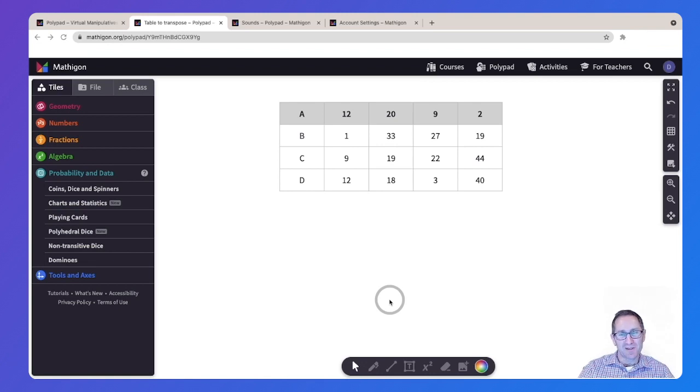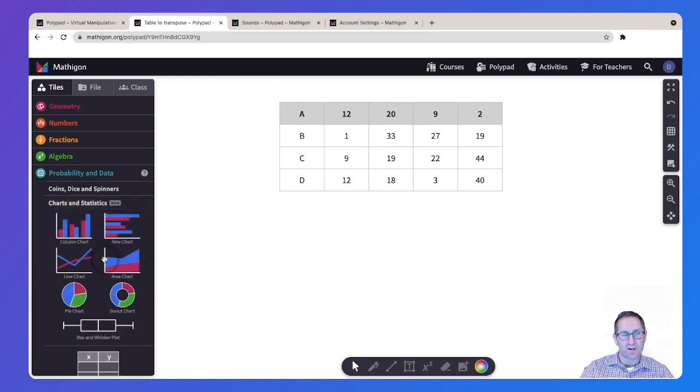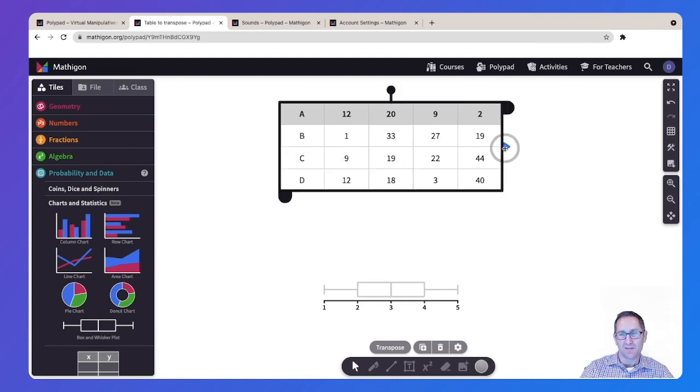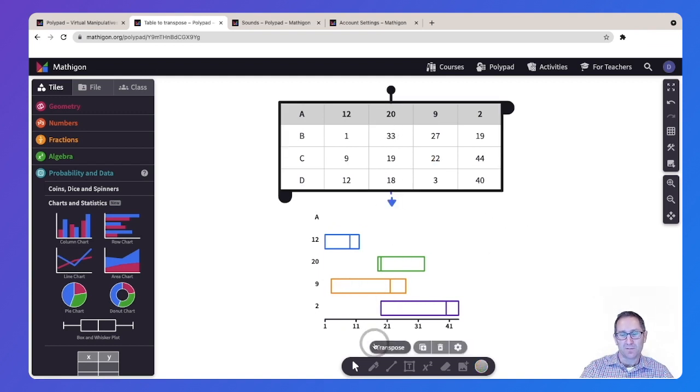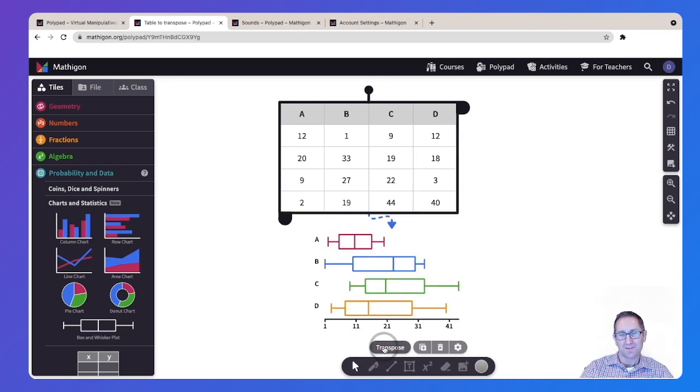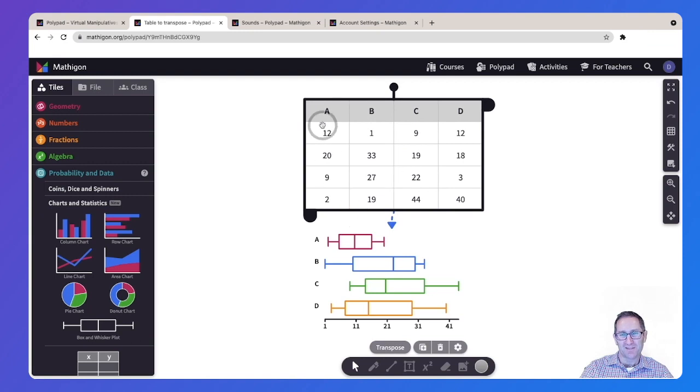The next new feature is the ability to transpose data in a table. Here is a table of data that I want to make a box and whisker plot for. And I want a box and whisker for each row, A, B, C, and D. I click on the blue handle, attach it to the box and whisker, and I see that instead of getting a box and whisker for each row, I got one for each column. Not what I was hoping. So if I click on the table and select transpose at the bottom, the rows will become columns. There we go. So now I have a box and whisker for A, B, C, and D. Wonderful.